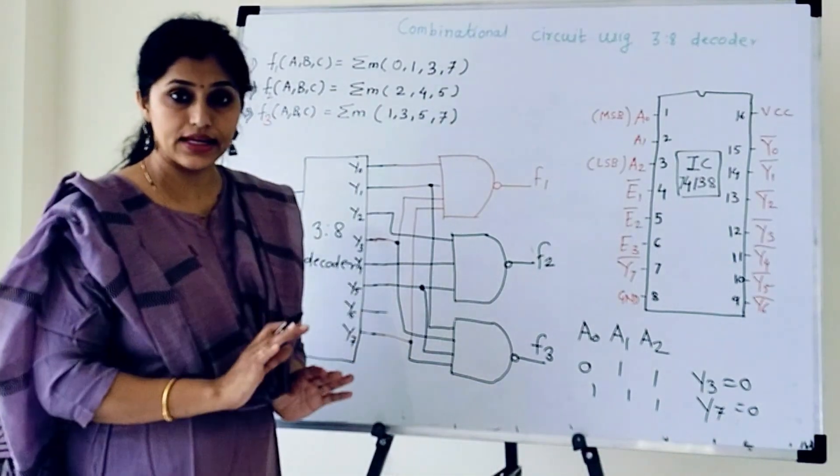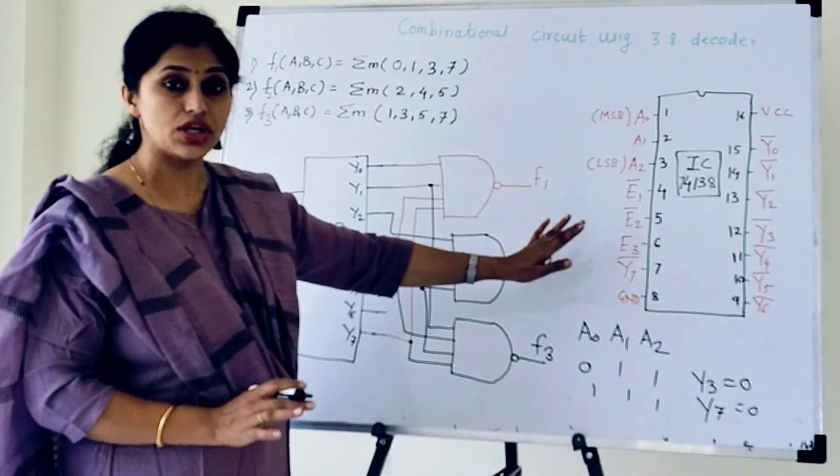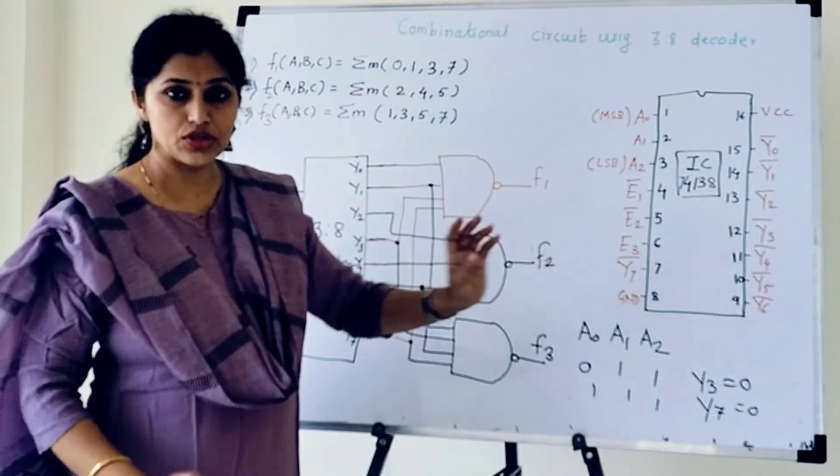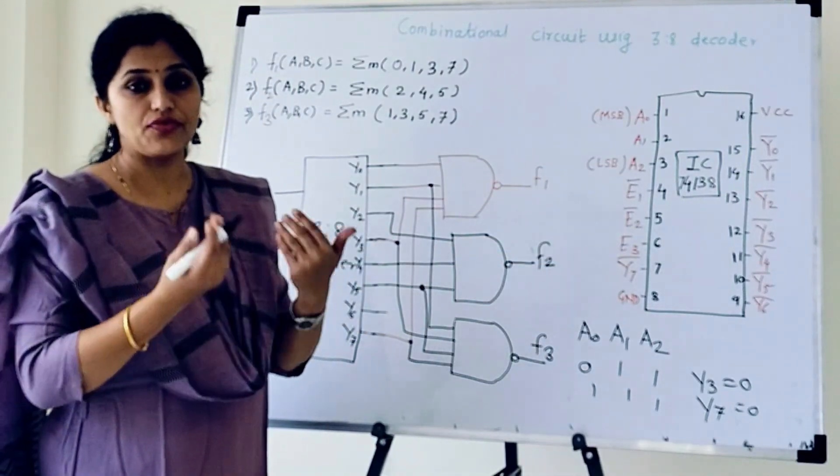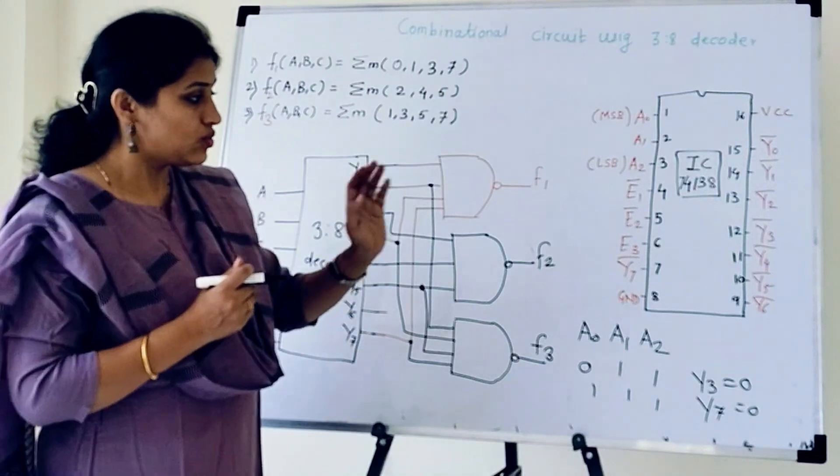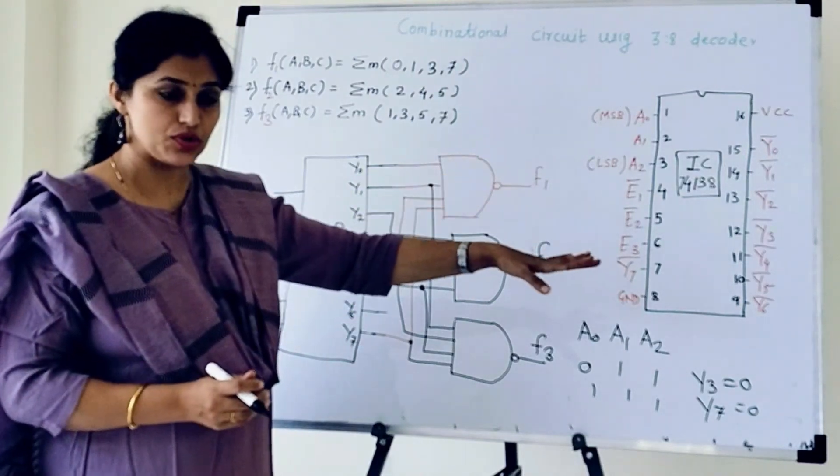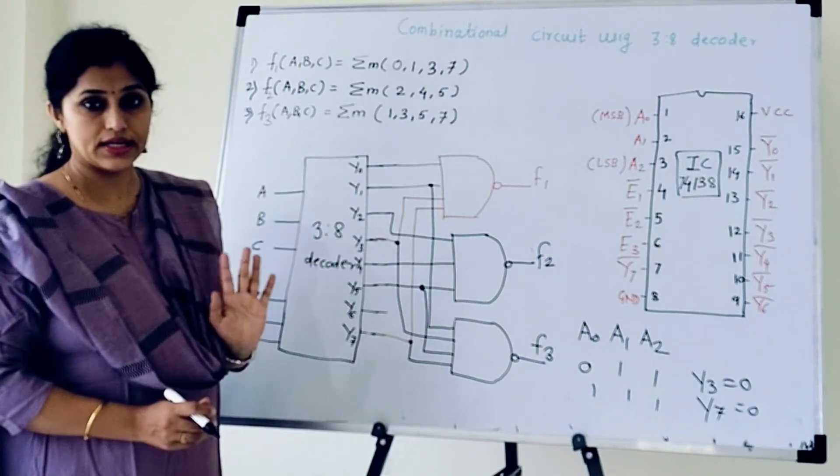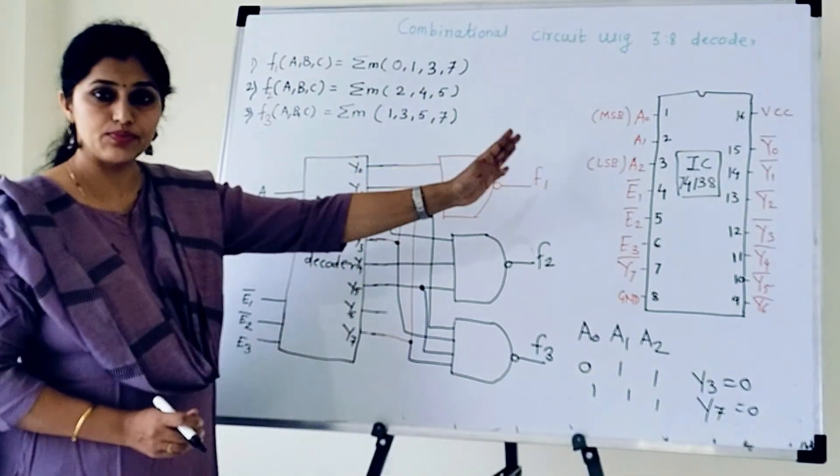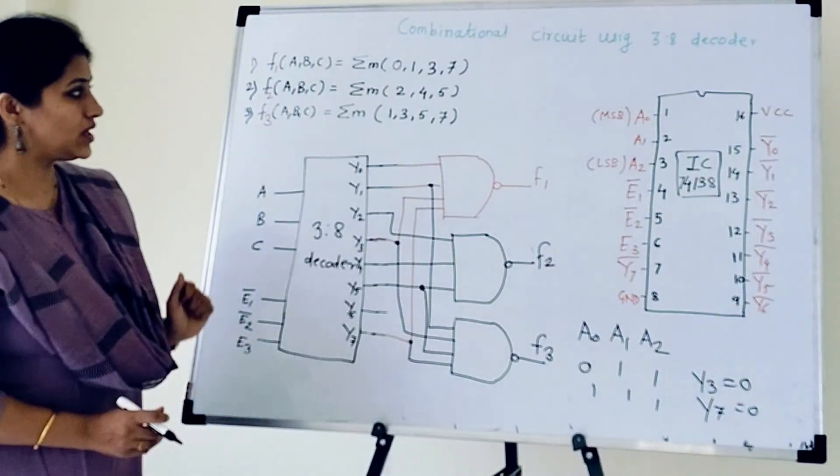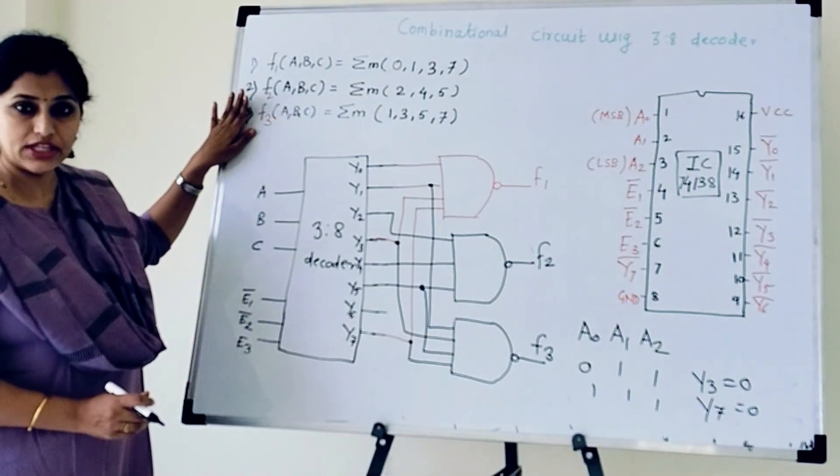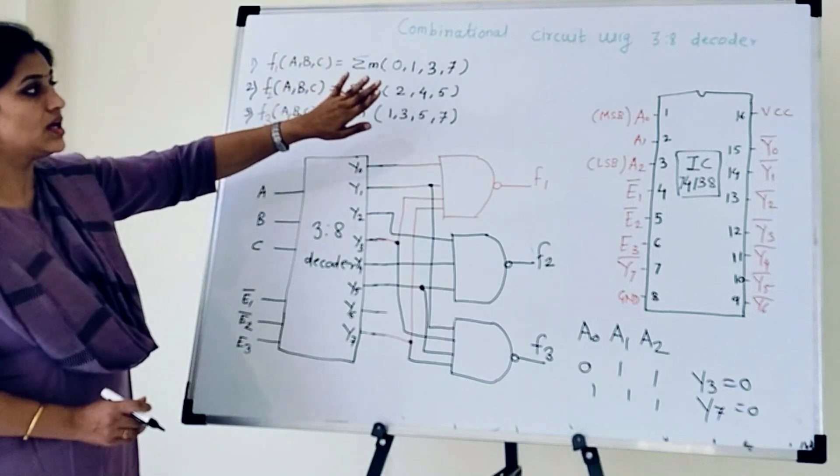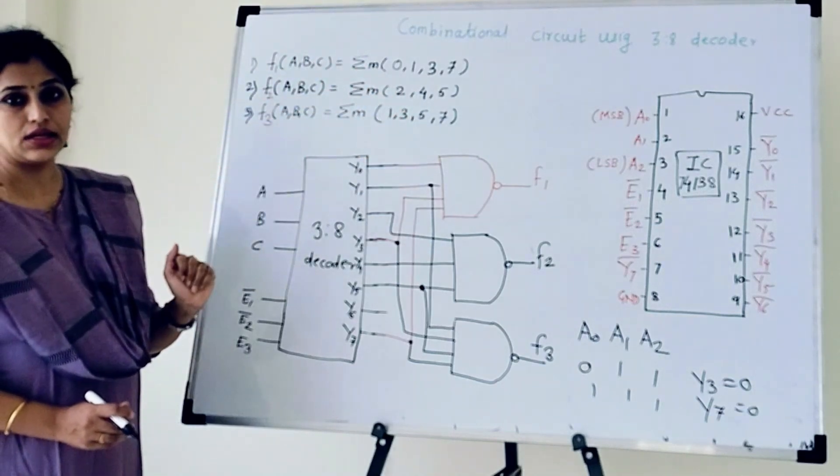I have taken NAND gates because my decoder generates active low outputs. In case of decoder, if I have an IC whose outputs are active high outputs, then instead of NAND gates, I will choose OR gates. And I will connect these to inputs of OR gates. So in this way, we can implement combinational output using IC 74138.